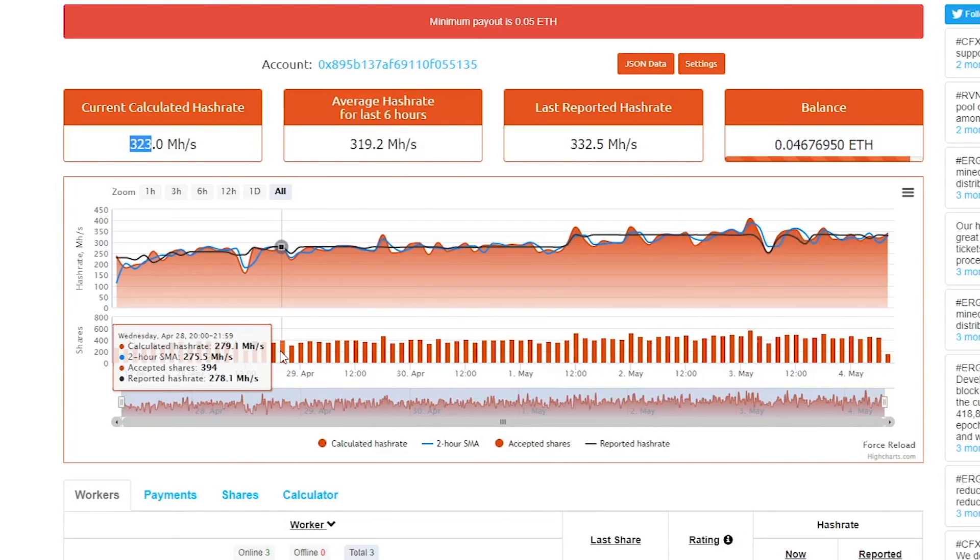Based on the number of shares that I have submitted, they calculate my current hash rate. So the shares is how I prove that I'm actually working, because this number right here, this reported hash rate, I can make this number whatever I wanted to.